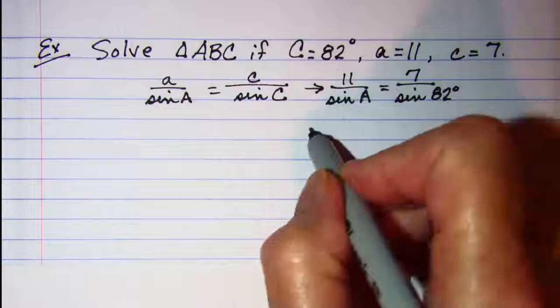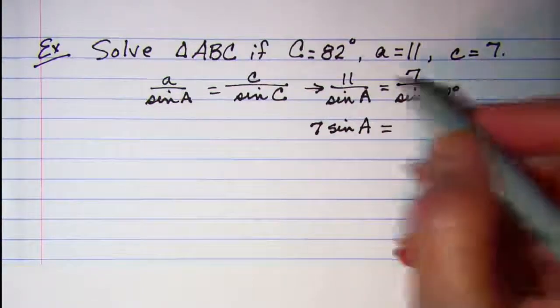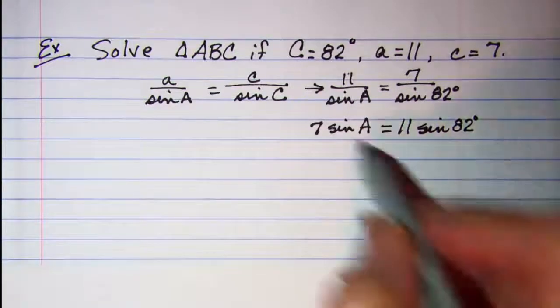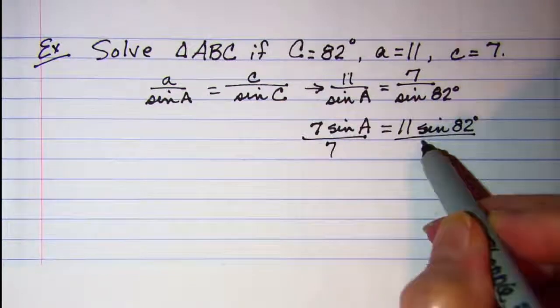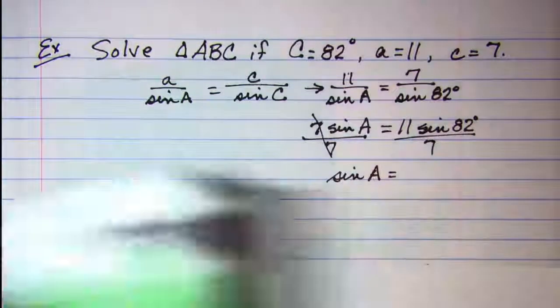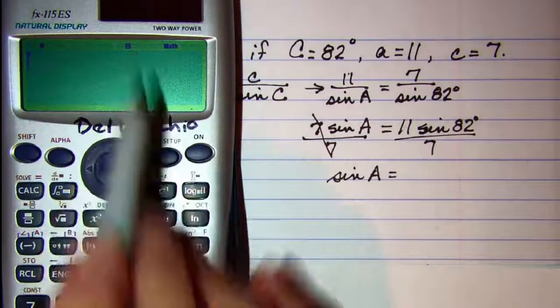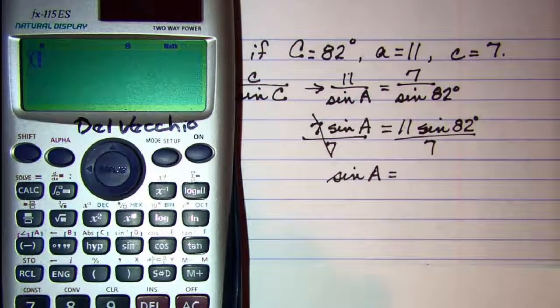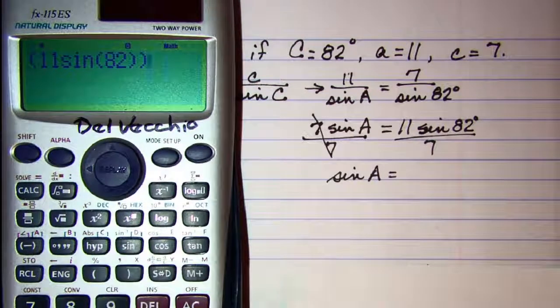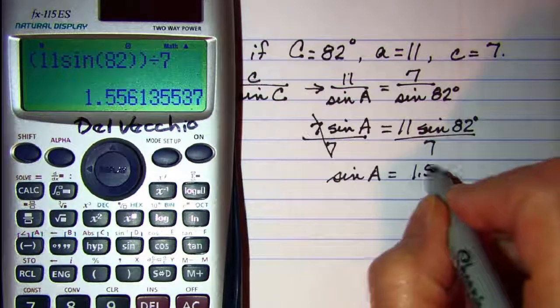Now, we're going to solve this as any others, we'll just do cross multiplication. So, we have 7 times the sine of angle A, that's this cross product, equals 11 times the sine of 82, and then divide both sides by 7, so that these cancel, and I have sine of A is equal to, make sure we're in degrees, the little D right there indicates degrees. I'll open up my numerator, 11 sine of 82, close my numerator, divided by 7, 1.556.